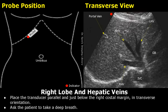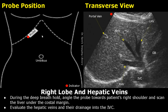Now we will see how to scan the hepatic veins. Place the transducer parallel to the right costal margin and place it just below this costal margin in transverse orientation. Then ask the patient to take a deep breath. After the breath hold, angle the probe towards the patient's right shoulder and scan the liver under the costal margin. You will be able to see all three hepatic veins.